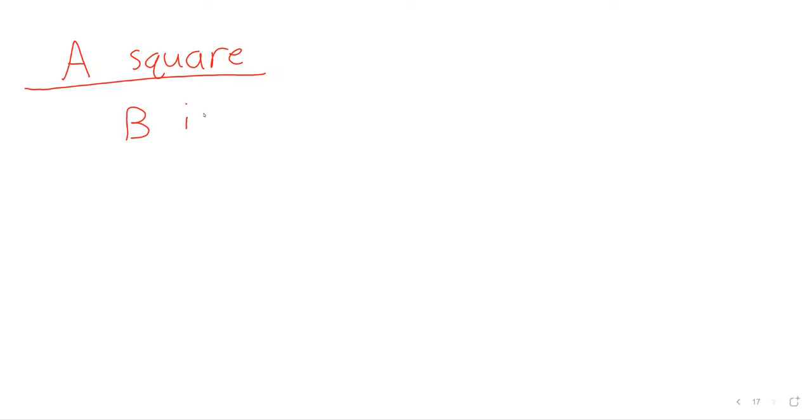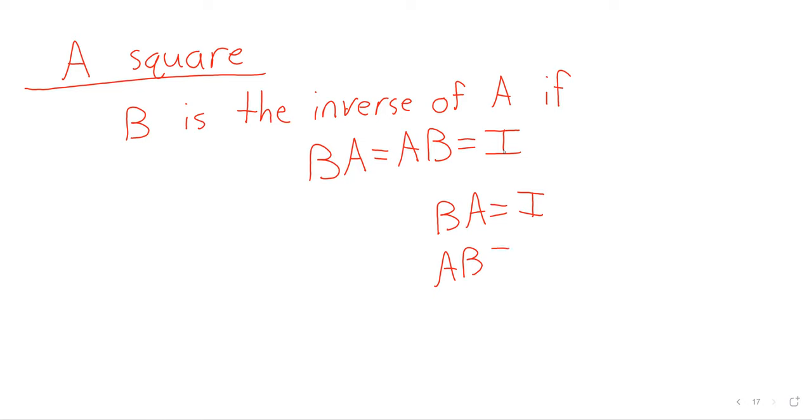So B is the inverse of A if B times A and A times B are both the identity matrix I. In theory, those are two different statements. That is, B times A equaling I and A times B equaling I are two different conditions because matrix multiplication isn't commutative. B times A and A times B don't have to be the same.